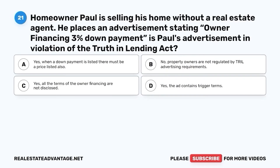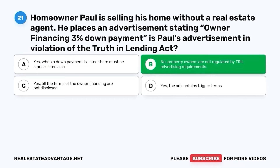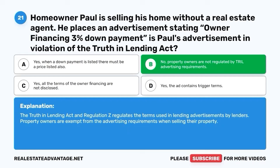Question 21. Homeowner Paul is selling his home without a real estate agent. He places an advertisement stating: Owner financing, 3% down payment. Is Paul's advertisement in violation of the Truth in Lending Act? A. Yes, when a down payment is listed, there must be a price listed also. B. No, property owners are not regulated by TILA advertising requirements. C. Yes, all the terms of the owner financing are not disclosed. D. Yes, the ad contains trigger terms. The correct answer is B. No, property owners are not regulated by TILA advertising requirements. The Truth in Lending Act and Regulation Z regulate the terms used in lending advertisements by lenders. Property owners are exempt from the advertising requirements when selling their property.